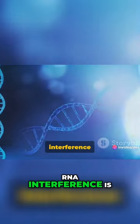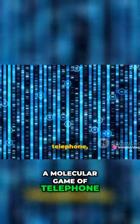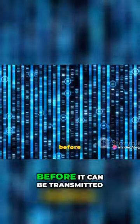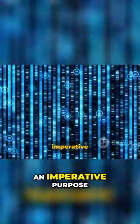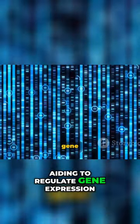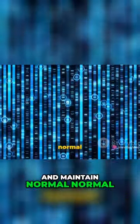Essentially, RNA interference is a molecular game of telephone, where the message gets misplaced before it can be transmitted. But rather than inducing chaos, this disruption serves an imperative purpose, aiding to regulate gene expression and maintain normal cell functioning.